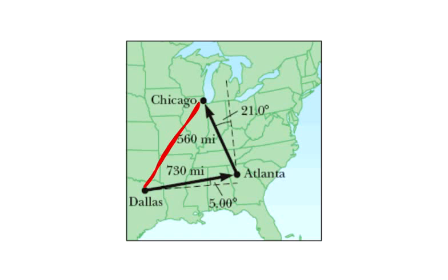A map suggests that Atlanta is 730 miles in a direction 5 degrees north of east from Dallas. The same map shows that Chicago is 560 miles in a direction 21 degrees west of north from Atlanta. The figure shows the location of these three cities. Modeling the earth as flat, use this information to find the displacement from Dallas to Chicago.